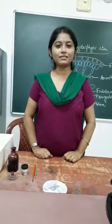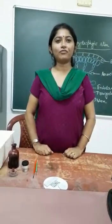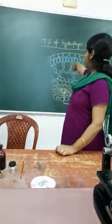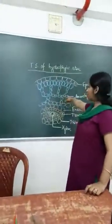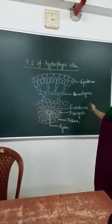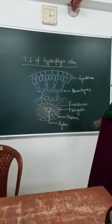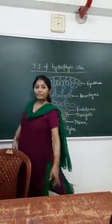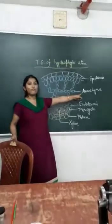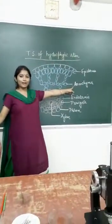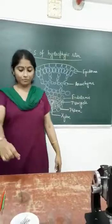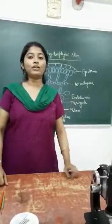We will do the transverse section (TS) of the hydrophytic stem. As you can see, the internal structure of the hydrophytic stem is shown here. The characteristic feature of the hydrophytic stem is the presence of aerenchyma, which allows the plant to float in water.